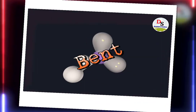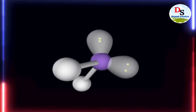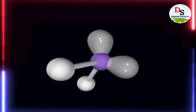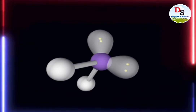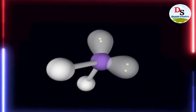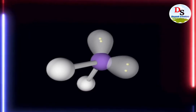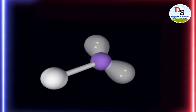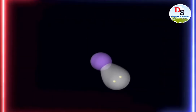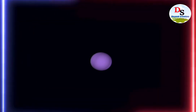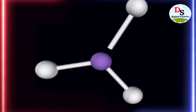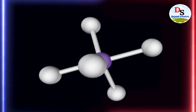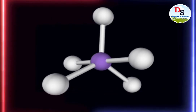It is the bent shaped structure of a molecule. It has 2 bond pairs and 2 lone pairs.